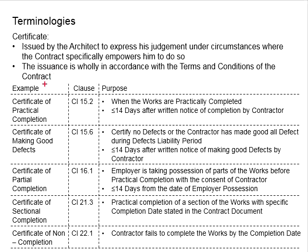The architect will need to issue the certificate of practical completion within 14 days after the written notice of completion by the contractor. Once the contractor has completed the work, the contractor will have to write a notice to the architect to notify that the work has been completed. Then the architect will have to inspect and check whether the building has been properly completed. Within 14 days, if the building has been completed, the architect will issue the certificate of practical completion.